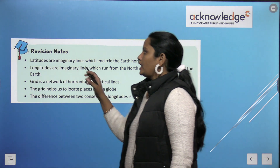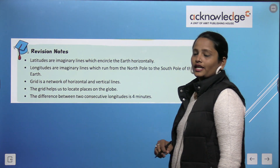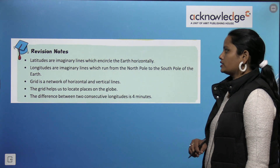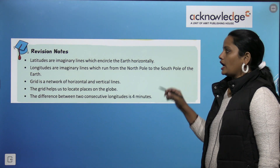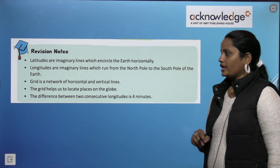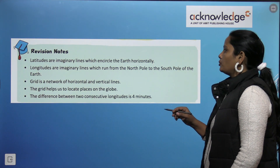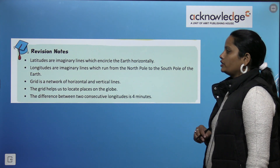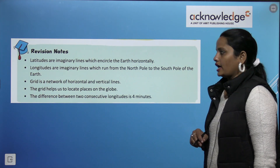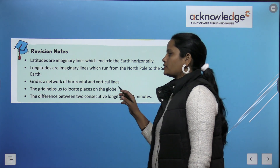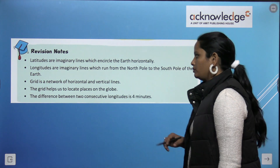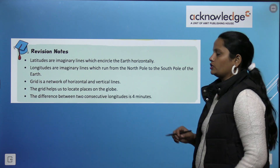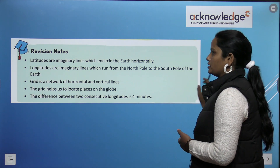Let's revise: Latitudes are imaginary lines which encircle the earth horizontally. Longitudes are imaginary lines which run from the north pole to the south pole of the earth. A grid is the network of horizontal and vertical lines formed by latitudes and longitudes, and the grid helps us to locate places on the globe. The difference between two consecutive longitudes is 4 minutes.